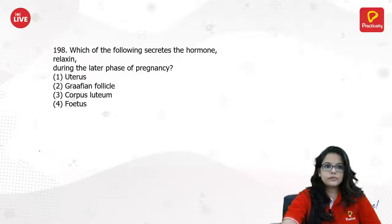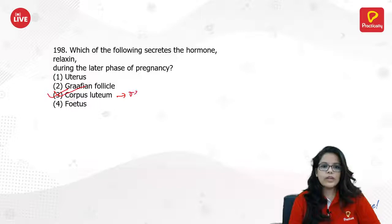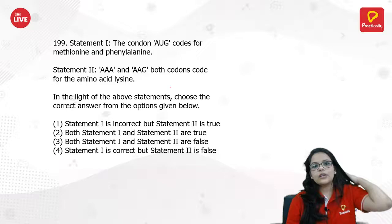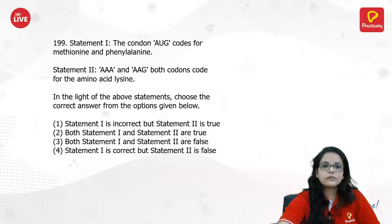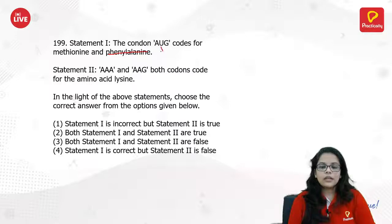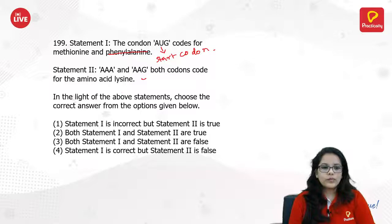Which of the following secretes the hormone relaxin? That is the corpus luteum. The codon AUG codes for methionine — not phenylalanine. That is wrong. AUG is also a start codon. AAA and AAG are both codons for amino acid lysine — this is a true statement. Statement one is incorrect but statement two is correct.